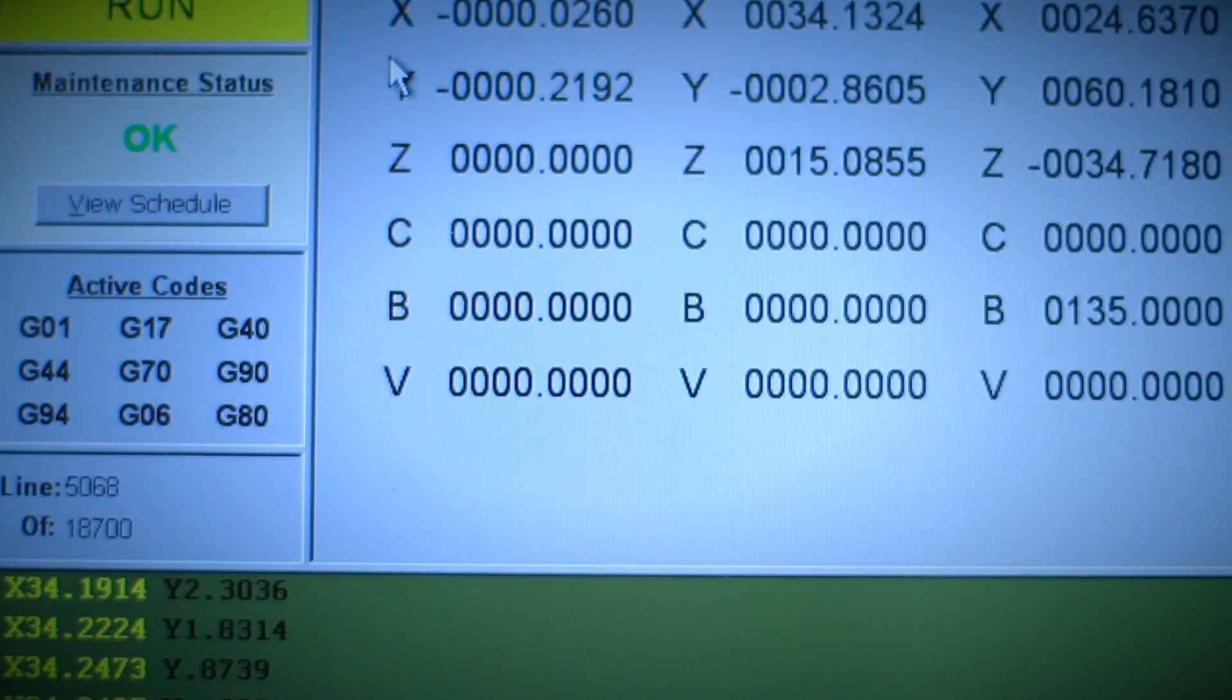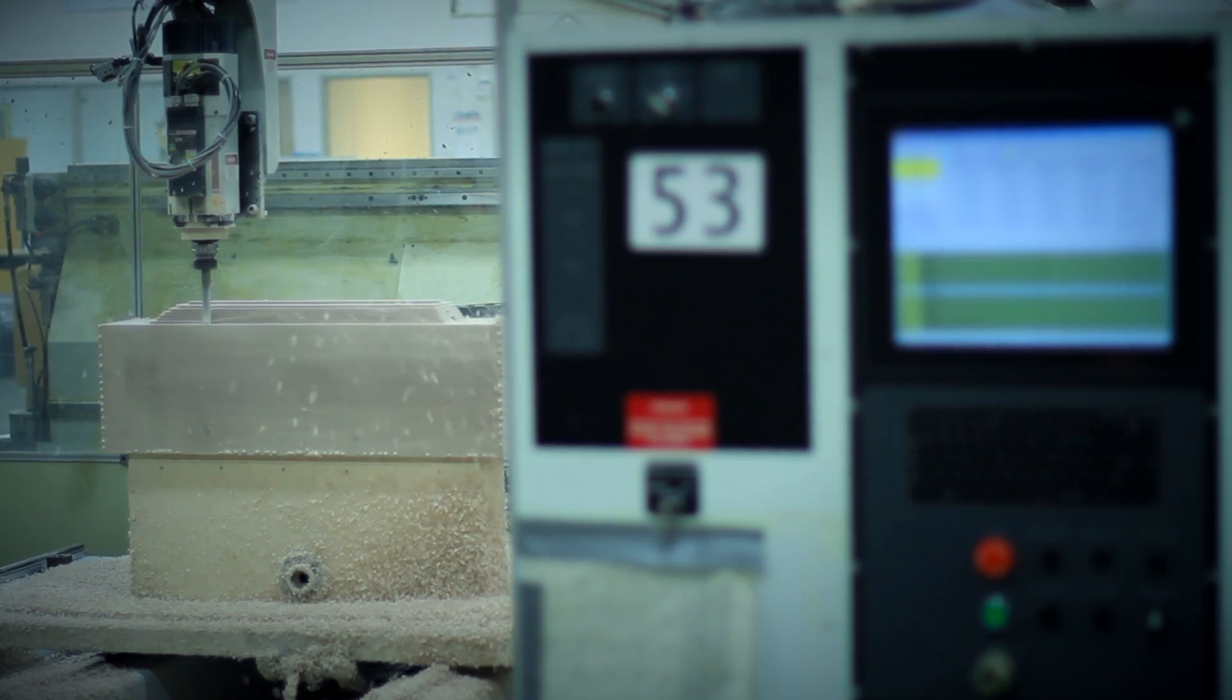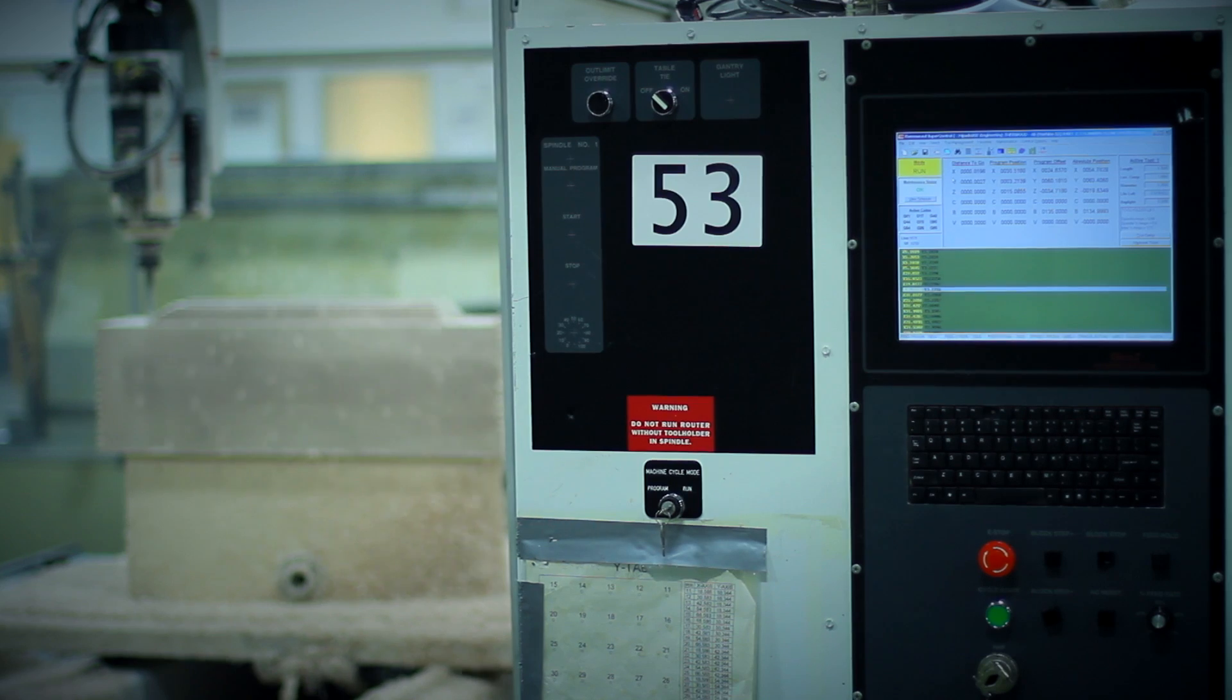CNC machining time to rough cut and then to perform a final finish cut was approximately six hours.